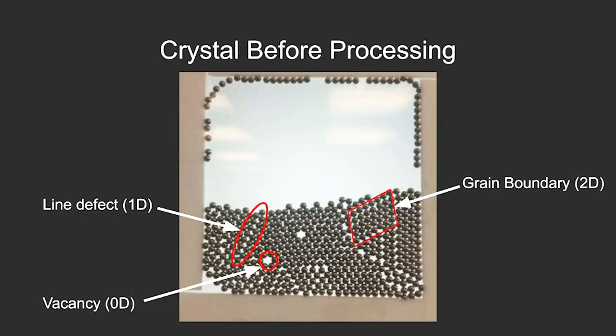Now that you've built your model, let's use it to visualize how material processing impacts the number of defects visible in a crystal. When looking at an original crystal, you can see several defects. These are a vacancy, line defect, and grain boundary defect.